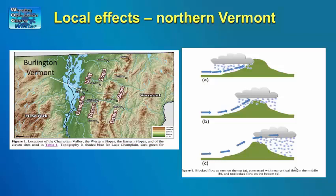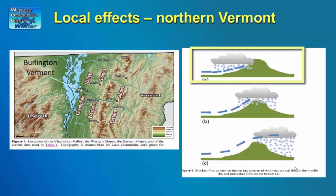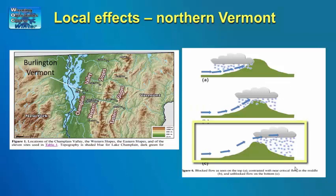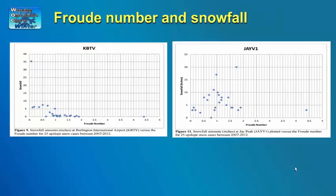The slide on the right shows the impact that blocking of the flow can have on snow in northern Vermont and other areas when the flow is oriented perpendicular to terrain. When the flow is blocked by terrain, heavy snow can fall upstream from the ridges. When blocking is less pronounced, heaviest snow falls on top of the ridge. When there is no blocking, the flow moves freely up and over the ridge, and heaviest snow will fall over the top of the ridge and into downstream valleys. The Froude number can be a good way to quantify the blocking potential of the flow for winter storms in complex terrain, with values less than one indicating blocked flow, while values greater than one indicate flow able to ascend up and over terrain barriers.